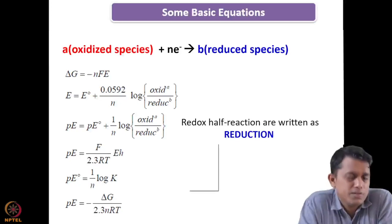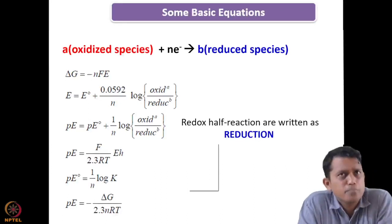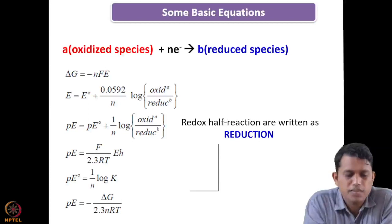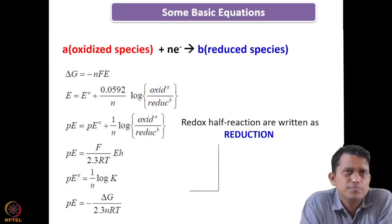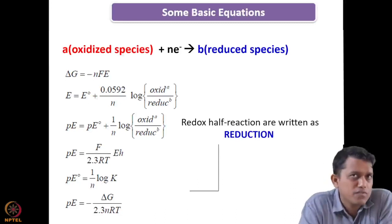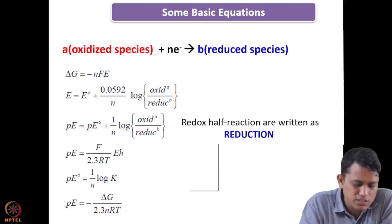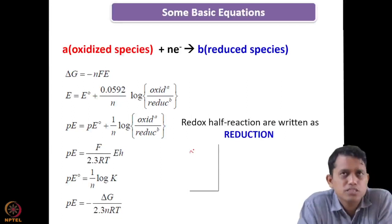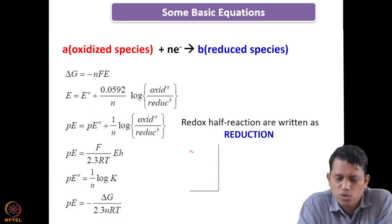Since PE cannot be measured directly — free electrons are not available as such in the medium — we use known chemical relations. We know that delta G equals minus nFE (free energy relation with reduction potential), and also the Nernst equation: E equals E° plus 0.059/n times log of oxidized species over reduced species. From these well-known equations, we will try to derive what we mean by PE.